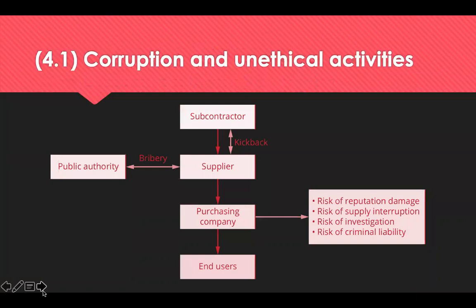A procurement professional needs to ensure that there are no unethical or corrupt activities within their processes or in their supply chain. Corruption is an unethical activity undertaken by a person with control or in authority, and examples include things like bribery, deception, abuse of power, embezzlement and fraud.